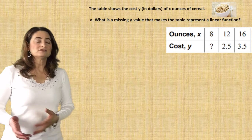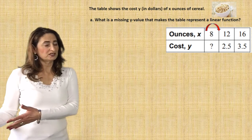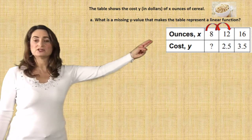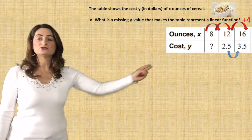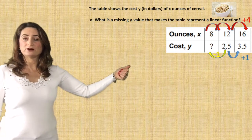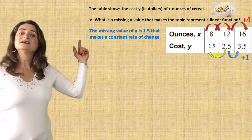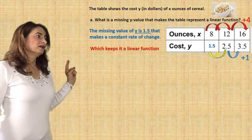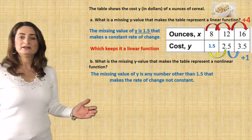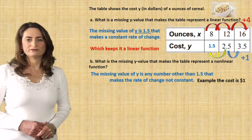Here's the last example for today's lesson. The table shows the cost y in dollars of x ounces of cereal. What missing y value makes the table represent a linear function? A constant rate of change means finding a pattern. The x increases from 8 to 12 to 16 by 4, and y increases from 2.5 to 3.5 by 1. Going backward, subtract 1 from 2.5 to get 1.5. For a nonlinear function, use any number that does not equal 1.5.